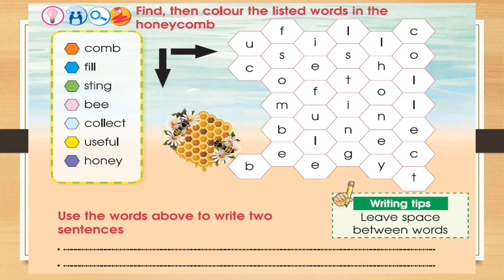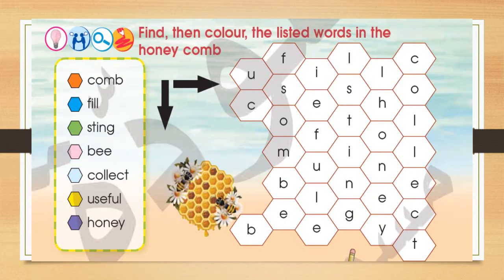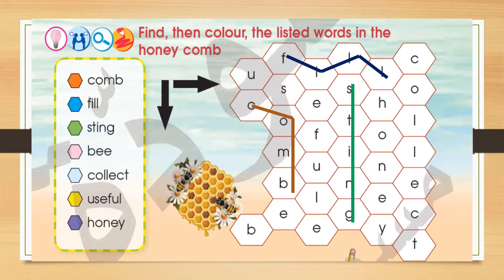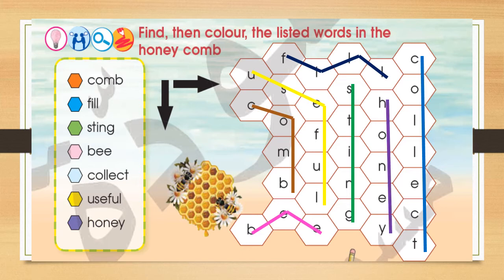Find them, then color the last words in the honeycomb. The answers: this is calm, this is fell, this is sting, this is bee, this is collect, this is useful, and this is honey.